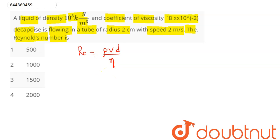Substituting the values: density is 1000 kg per cubic meter, velocity is 2 meter per second, diameter is 2R, that is 2 into 2 centimeter, that is 10 power minus 2.